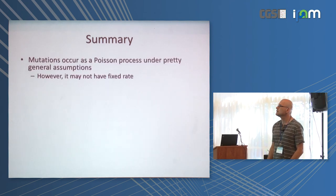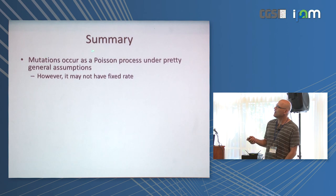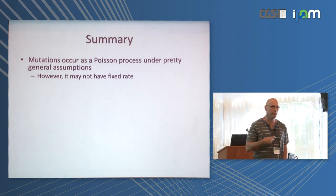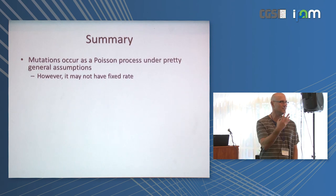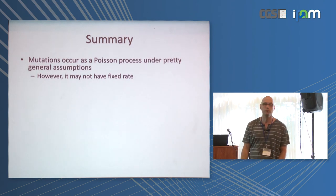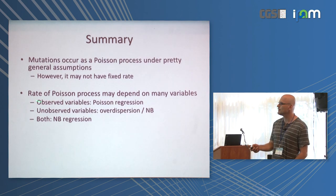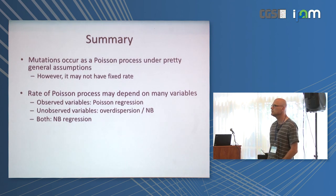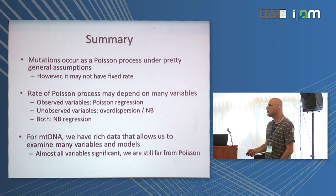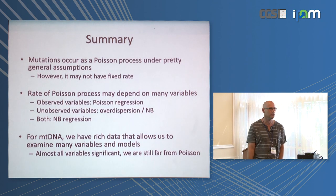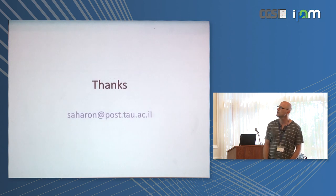To summarize: the idea of an exponential waiting time or Poisson process is very general and appropriate, but the rate may change. A process with changing rate doesn't look like a Poisson process, but it's actually a variable-rate Poisson process. Things we observe can be put into a Poisson regression framework; things we don't observe require accounting for over-dispersion via negative binomial regression. Mitochondrial DNA is a special place where we think we can make a lot of progress, and we've made a little bit of that in building these models. Thanks.